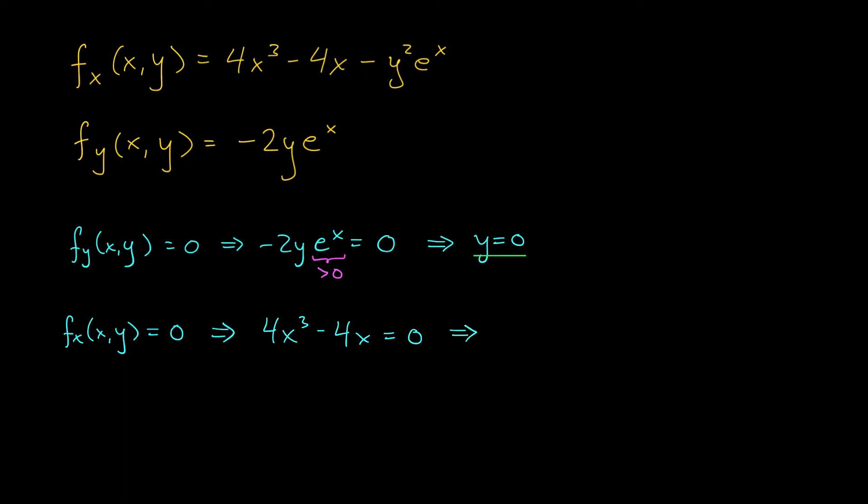Well, now we can do some factoring. We factor out a 4x. That leaves us with 4x times x squared minus 1 is equal to zero. And now factor the x squared minus 1. We have 4x times x minus 1 times x plus 1 is equal to zero. Now we can see our solutions. X is either zero, 1, or negative 1. And of course, in all cases, y has to be zero.